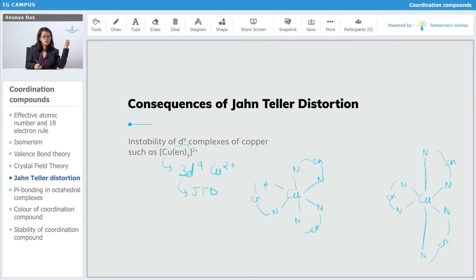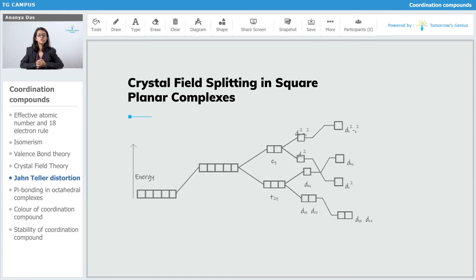So Jahn-Teller distortion causes stability also, it causes instability also. So it has dual behavior. So this was all about your Jahn-Teller distortion. Next, we come to crystal field splitting in your square planar complexes. Square planar complexes can be said to be an extreme case of z-out distortion.